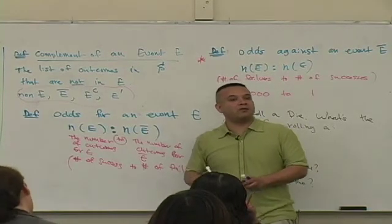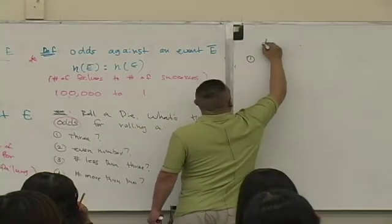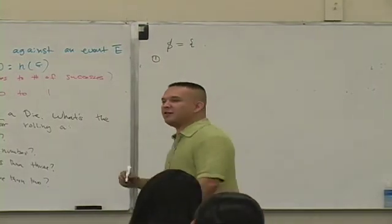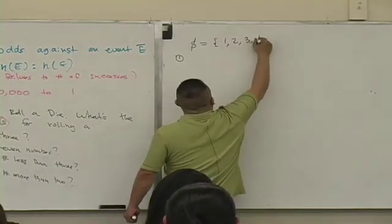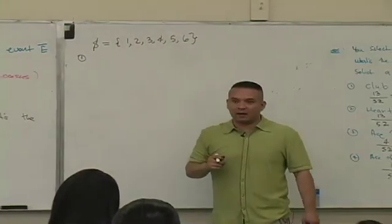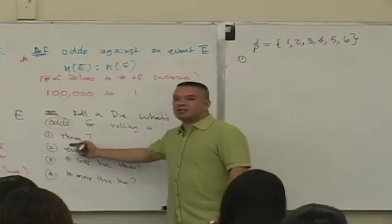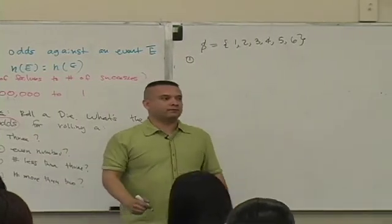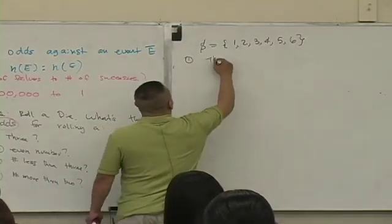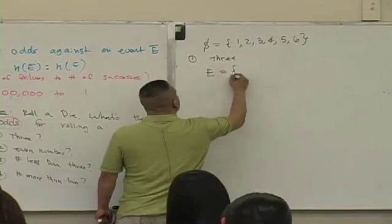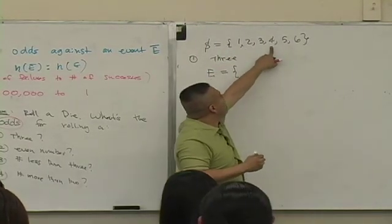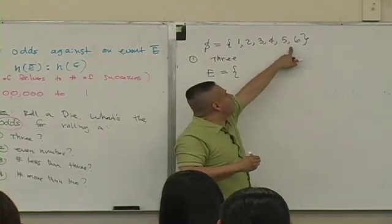So what's in the sample space when you roll a die? What's in the sample space? Oh, good. You guys know this, right? Okay. One, two, three, four, five, what? Six. Okay. Six. These are the outcomes associated with rolling a die. Is that right? Now, which outcome is associated with rolling a three? Which outcome is associated with rolling a three? Hmm. Let's look at the list. E is defined to be what? Is that outcome associated with rolling a three? No. No. No. No. No. Yes.